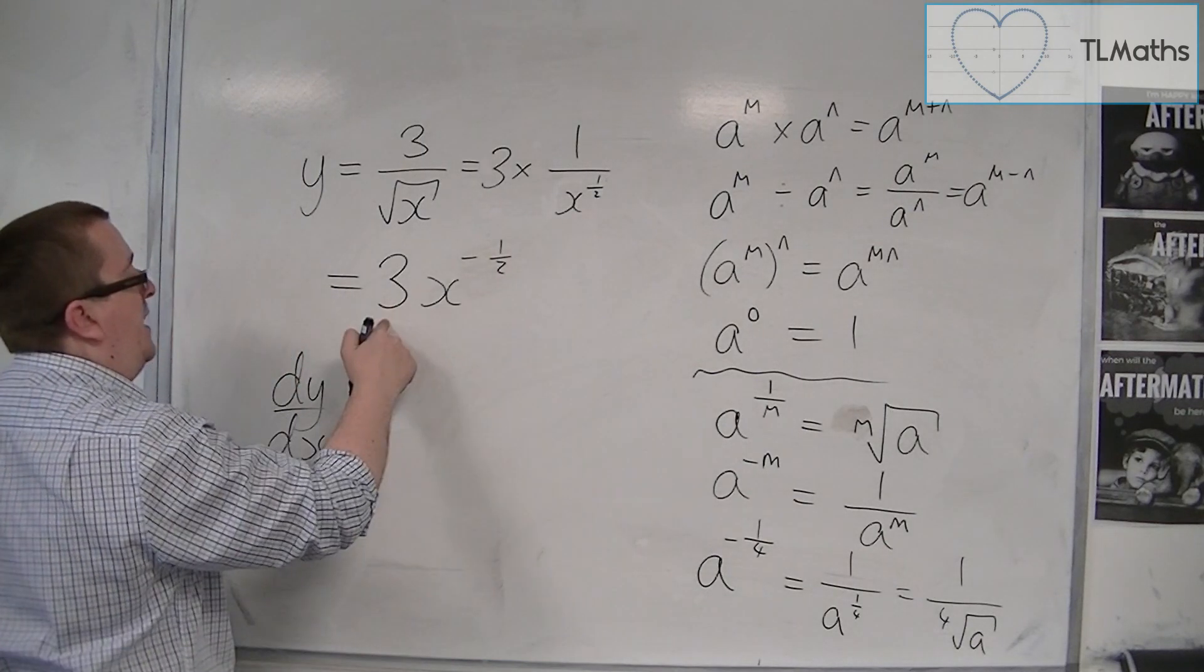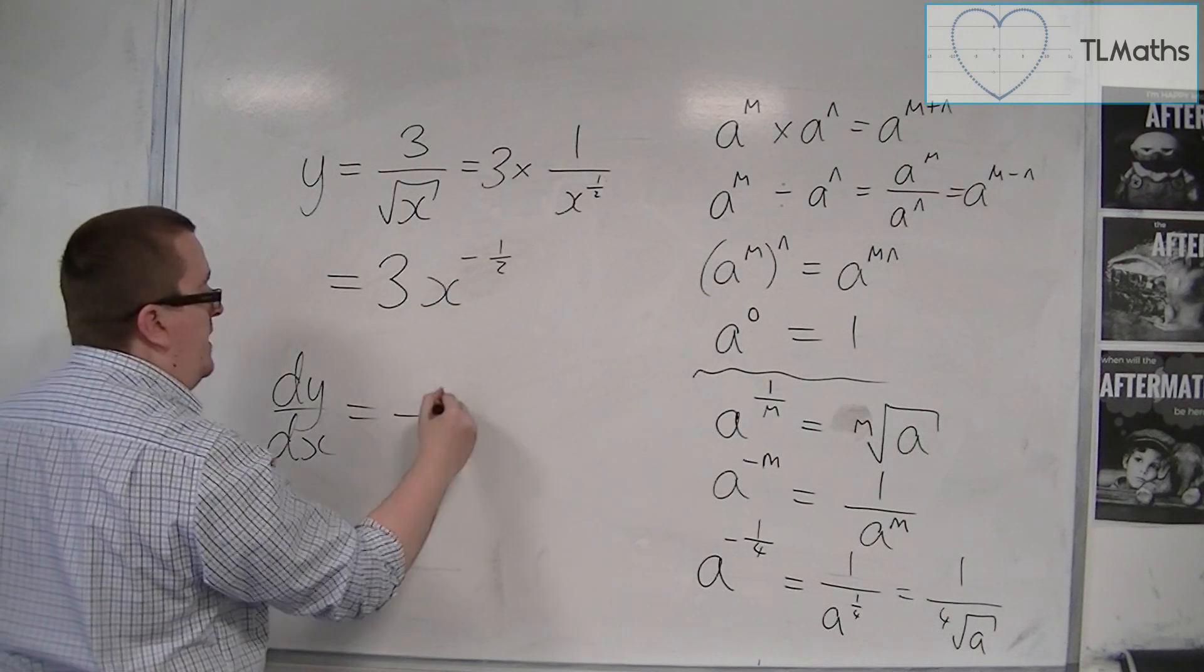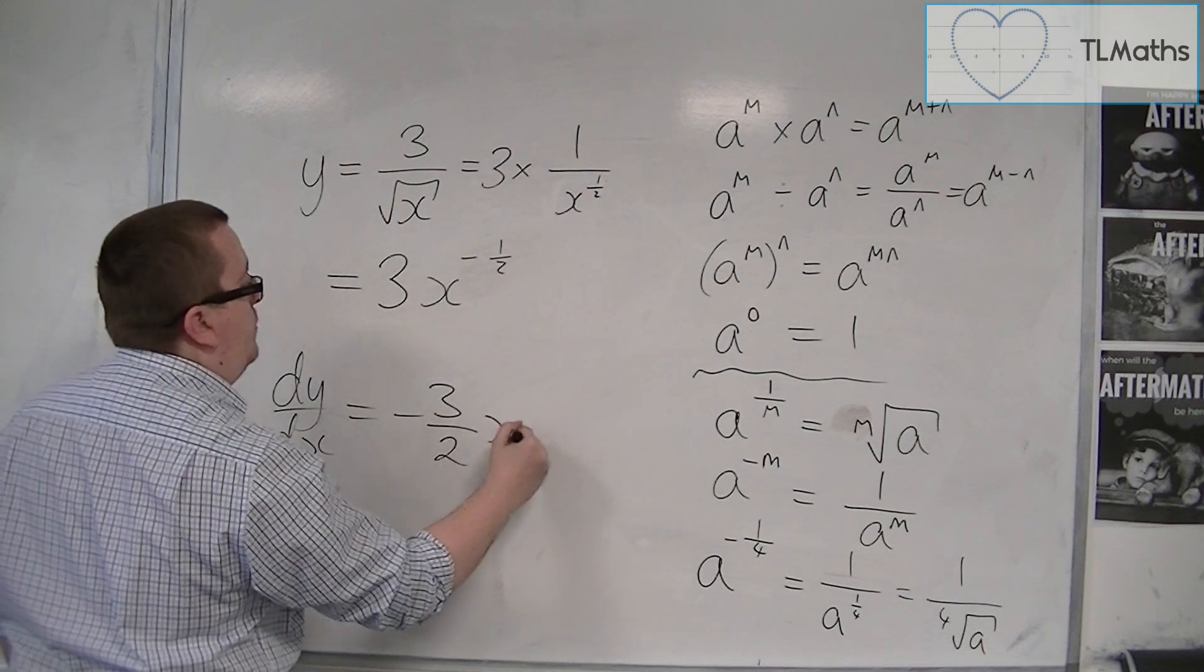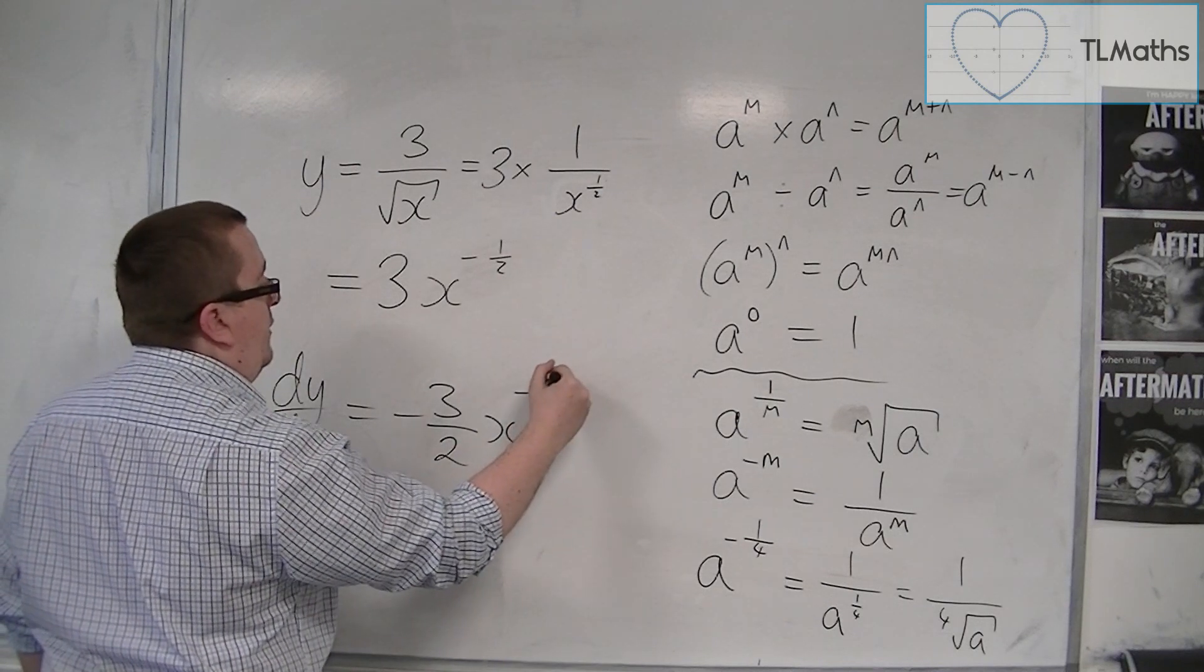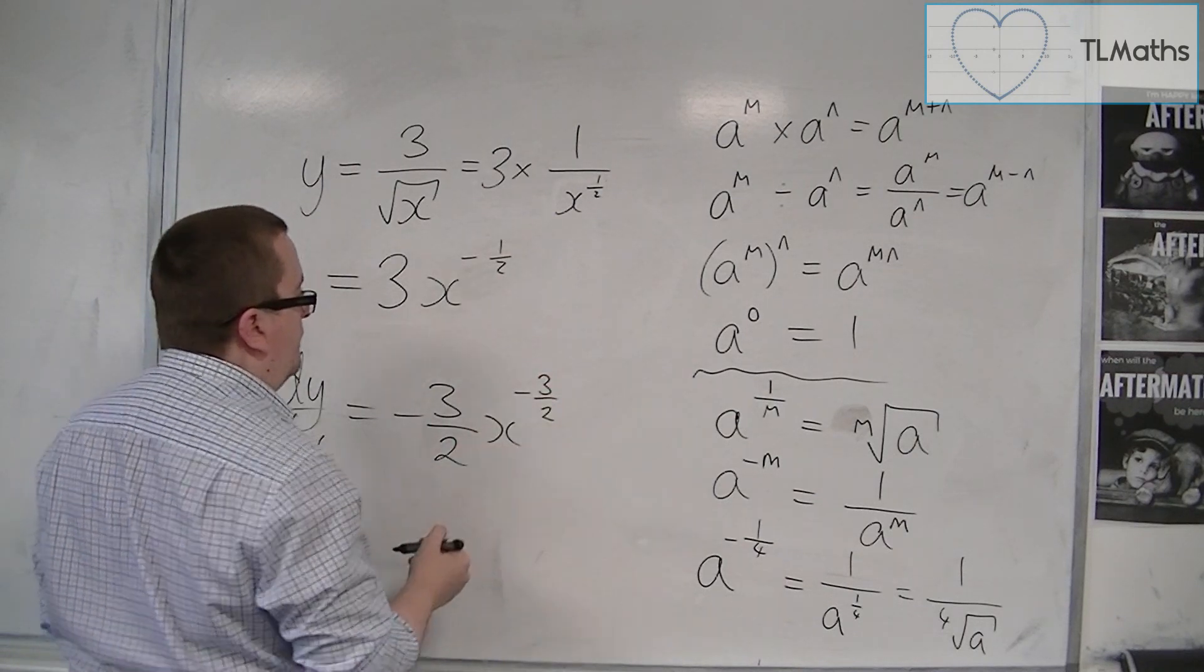And now we can differentiate it. Because the minus a half can come down the front, multiply with the 3, and then we take 1 off the power. So minus a half, take away 1, is minus 3 halves.